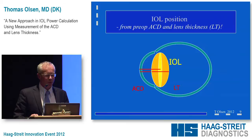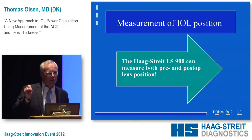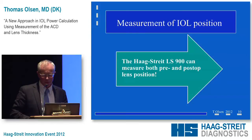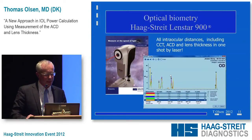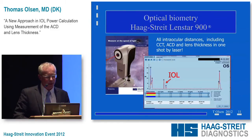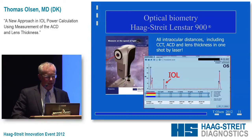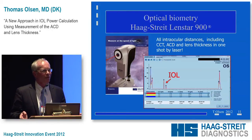If we measure the anterior segment structure — that is, the anterior chamber depth and the lens thickness — we can come up with a very nice correlation of the final position of the implant in that eye. With the Haag-Streit IOL Master, you can actually measure the IOL position with laser biometry, so it's very accurate. Lens thickness can be measured with high accuracy, and the final position of the implant comes up very nicely.